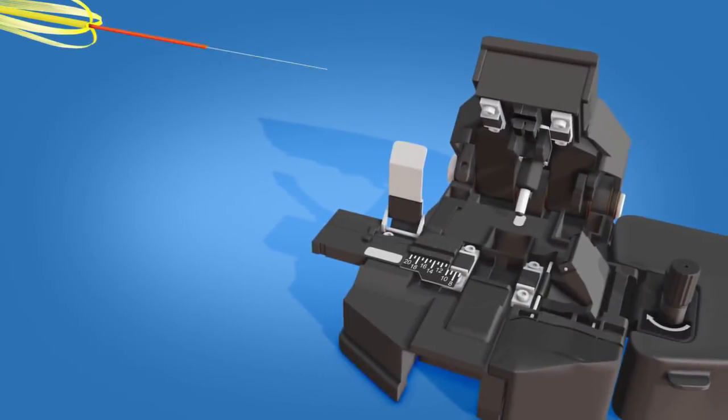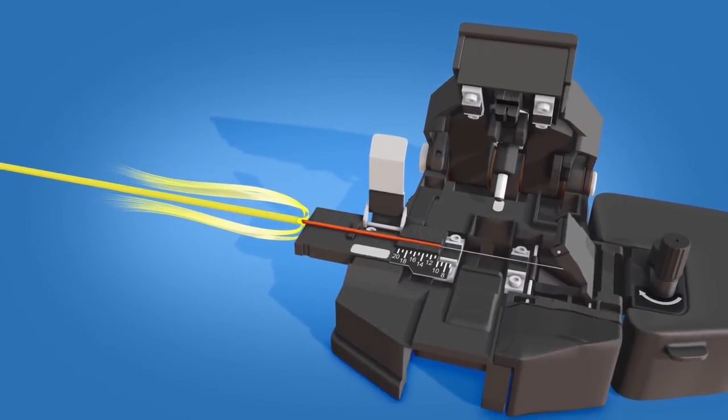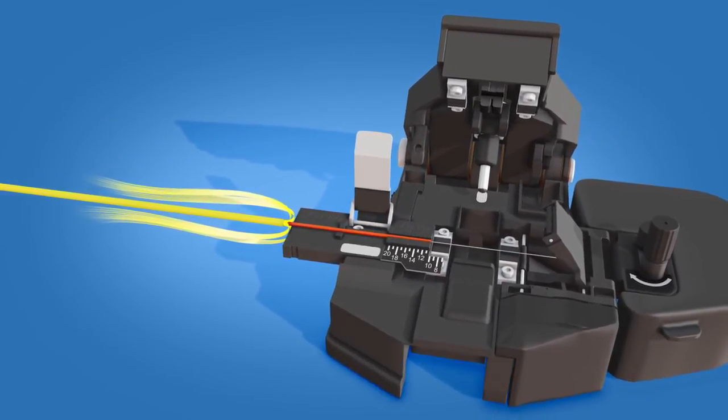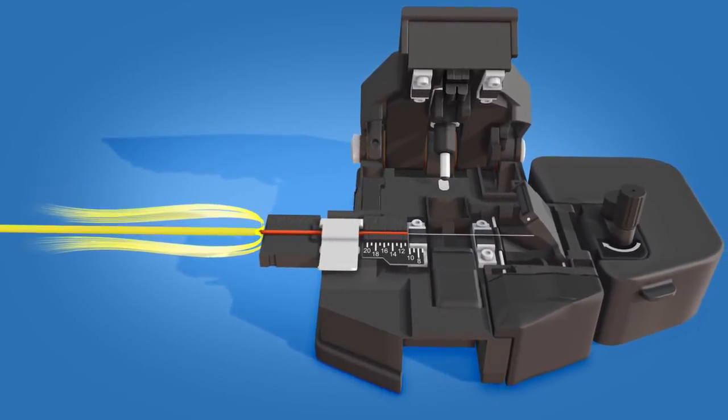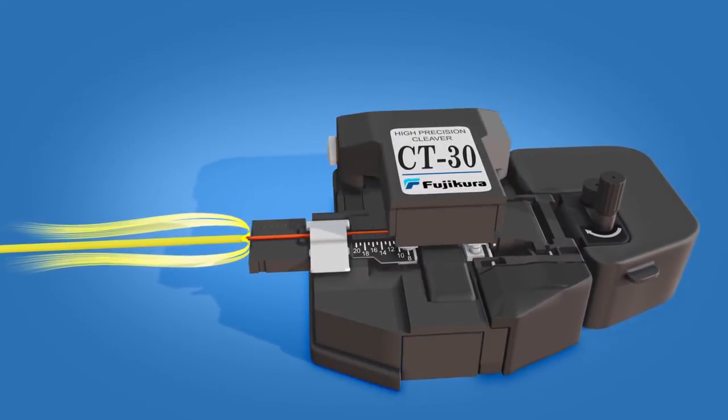Place the fiber into the CT30 cleaver at the 10.5 mm cleave length. Close the clamp. Push the cutting lever downward to cleave the fiber.